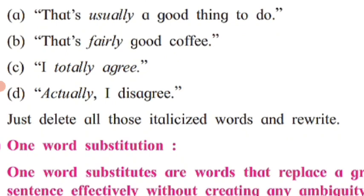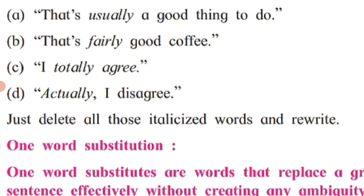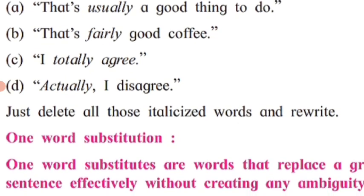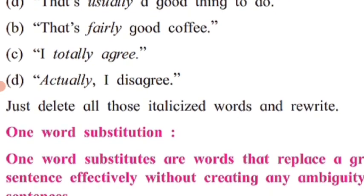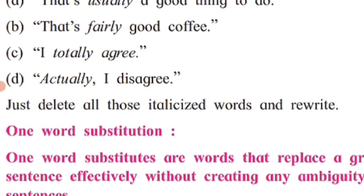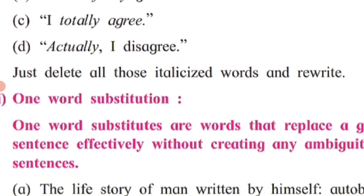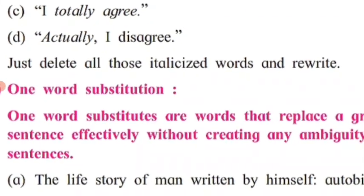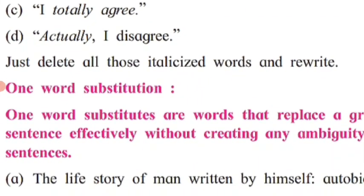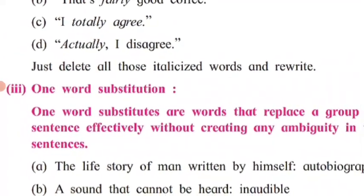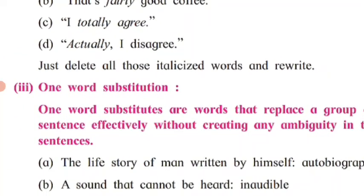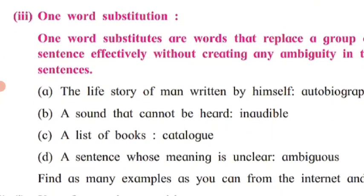Next, 'that is fairly good coffee' can be written as 'that is good coffee.' 'I totally agree' can be changed to 'I agree.' 'Actually, I disagree' can be converted to 'I disagree.' So just delete all those italicized words and rewrite. By removing even a single word, you can shorten the sentence.